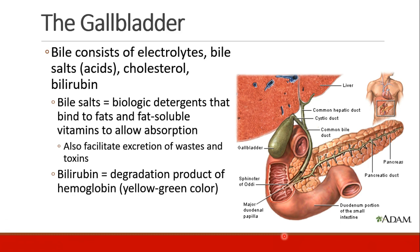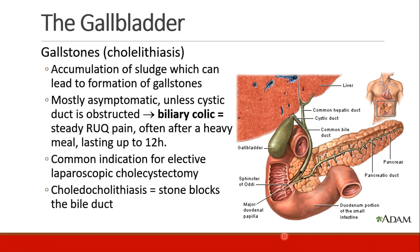Bilirubin, which is a degradation product of hemoglobin, is what gives bile its yellow-green color. Gallstones, also called cholelithiasis, is an accumulation of sludge in the gallbladder which can lead to formation of gallstones. Usually gallstones are asymptomatic unless the cystic duct becomes obstructed. This causes biliary colic, a steady right upper quadrant pain, often after a heavy meal, and can last up to 12 hours. This is a common reason for elective laparoscopic cholecystectomy.